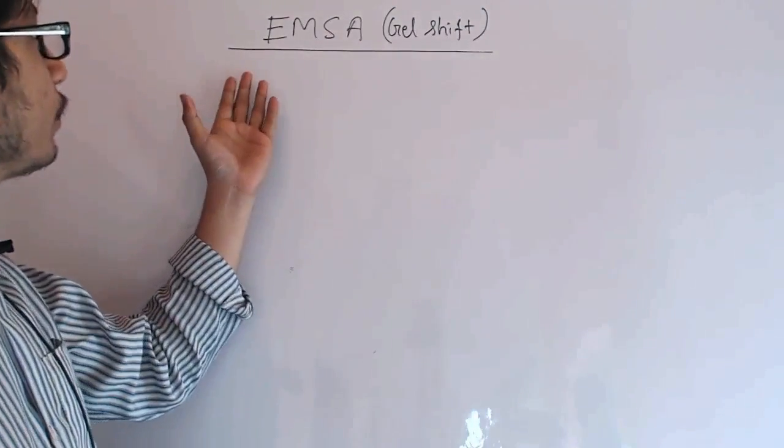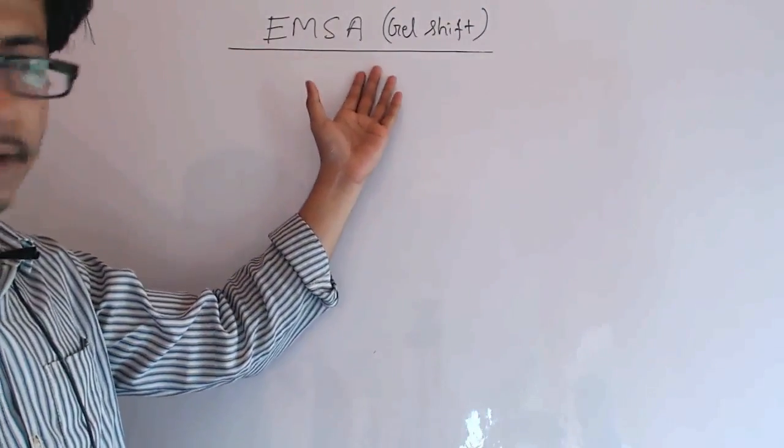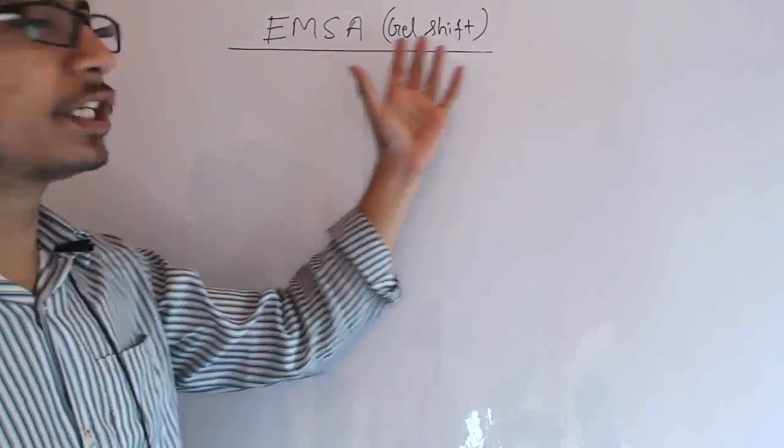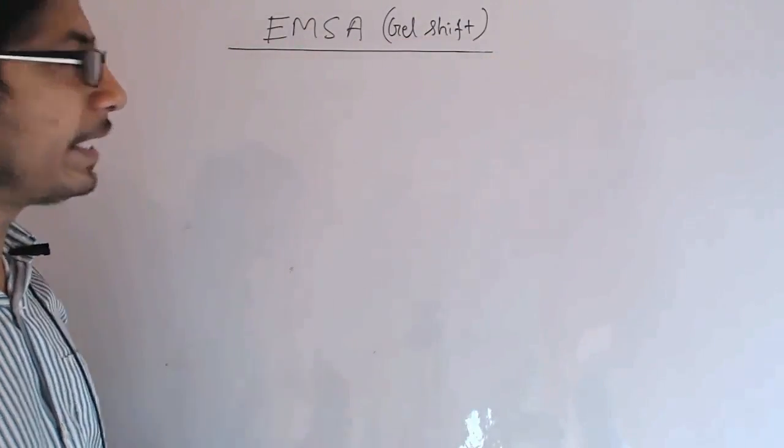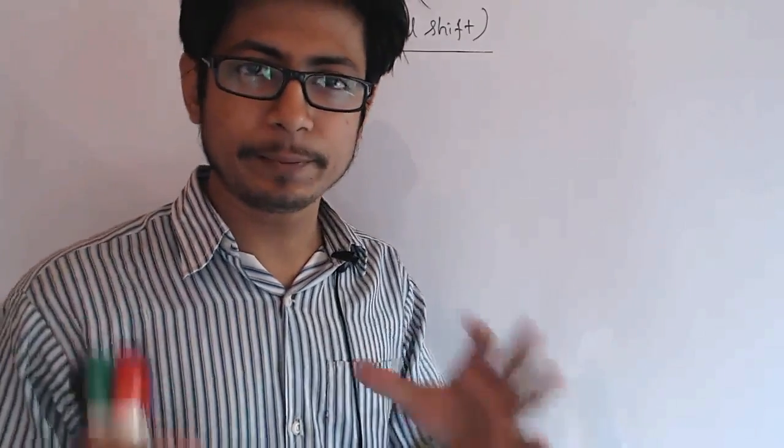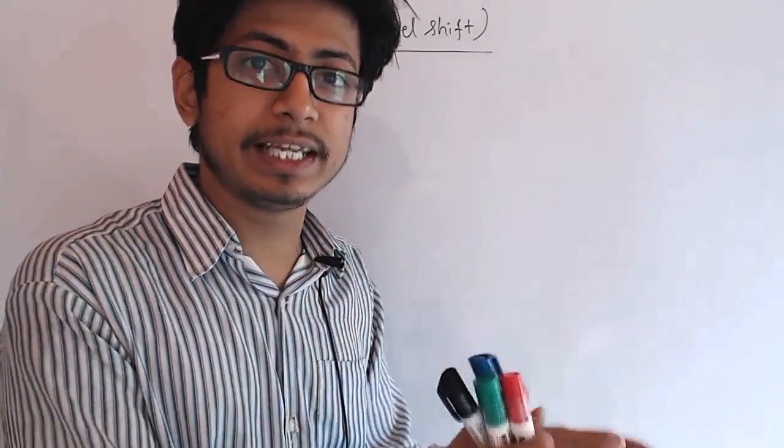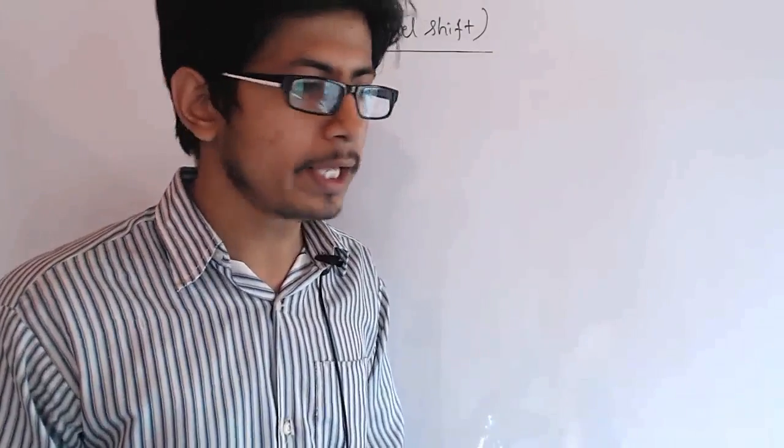Welcome back friends, welcome to another video tutorial from Tromus Biology. In this video tutorial we'll be talking about EMSA, or electrophoretic mobility shift assay, better known as gel shift assay or electrophoresis gel shift assay. This is a technique to detect whether protein is attached with DNA or RNA or not.